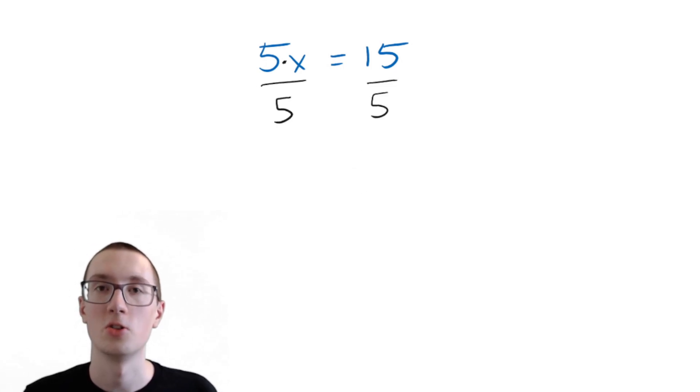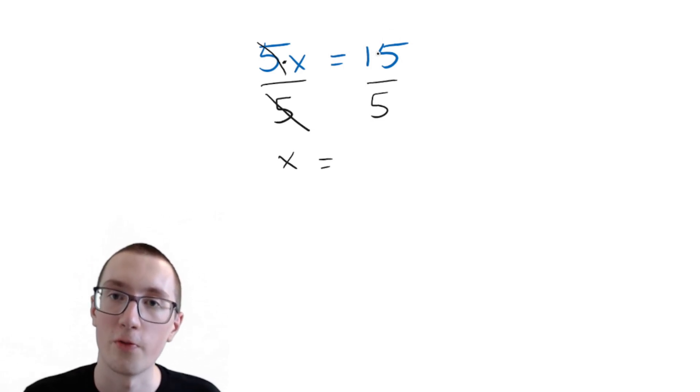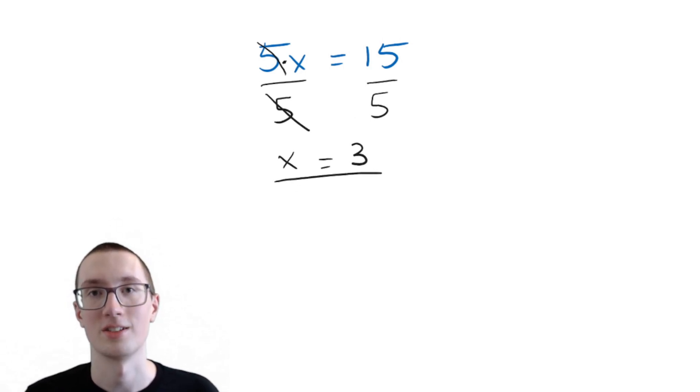Now remember, we need to do the division by 5 on both sides of the equation. So in this case, these 5s cancel out, and all we're left with is x. Well, that's great. But remember, the other side of the equation needs to get divided by 5 as well. So 15 divided by 5 is 3. And now we have x equals 3. And that's our answer.